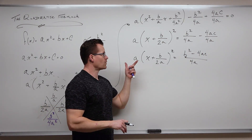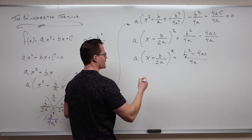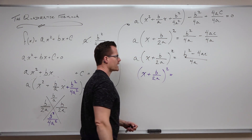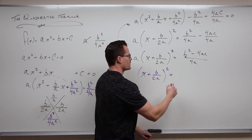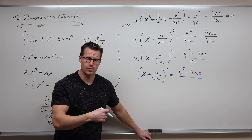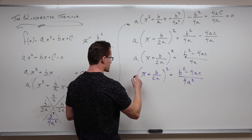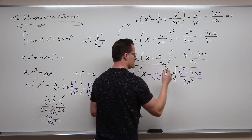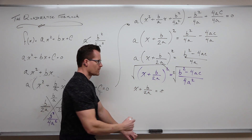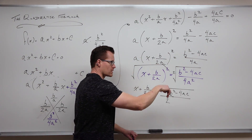There are only a few more things to do. Number one, we need to take a square root, but we cannot do it with that a still there. We have to divide both sides by a. When we divide by a, the left-hand side just becomes (x + b/2a). On the right-hand side, dividing by a is the same as multiplying by 1/a, so you multiply the denominator — we get 4a². Now we take the square root of both sides with a plus-or-minus. We have x + b/2a on the left. On the right, notice the denominator is a perfect square. The numerator stays as √(b² − 4ac). The square root of 4 is 2, and the square root of a² is a.